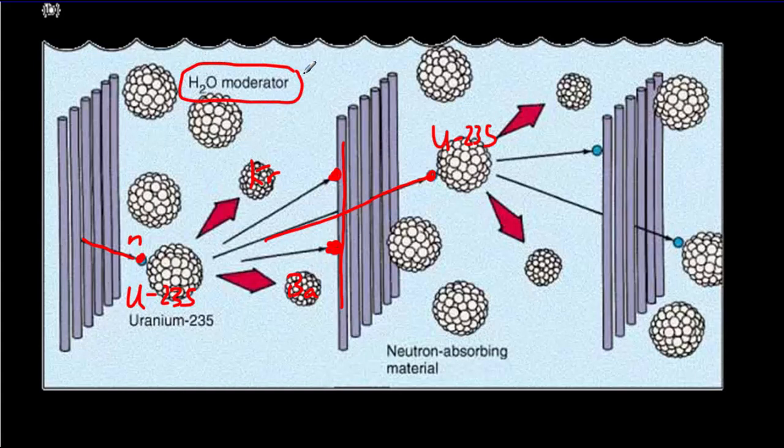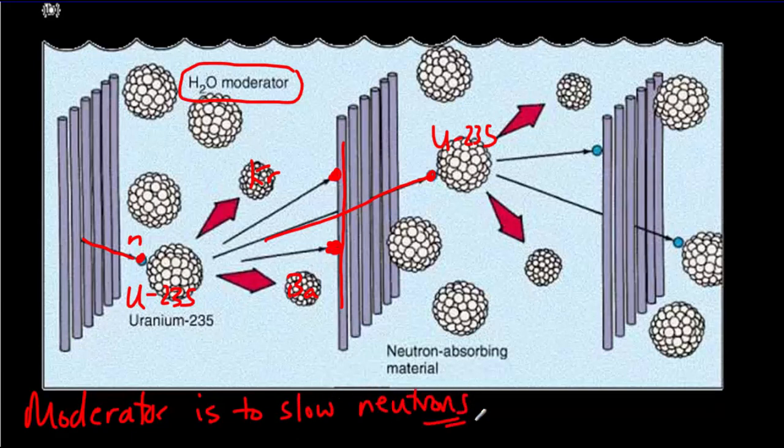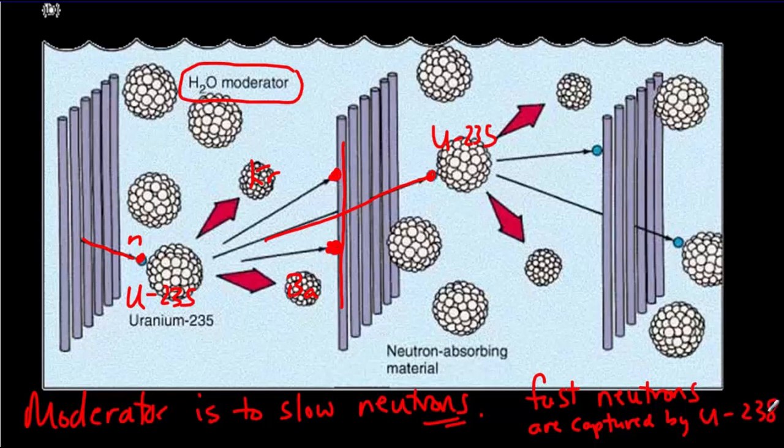But there's also something else in here and that's called the moderator. The moderator is generally just water. And the function of the moderator is to slow neutrons. Because, recall, it's only slow-moving neutrons that produce the fission of uranium-235. Fast-moving neutrons are captured or absorbed by uranium-238. And remember, there's a lot more uranium-238 than there is uranium-235. So if your neutrons are moving too fast, they're all going to be absorbed. And the only thing we really want to absorb those neutrons is the control rods. Because the control rods, we can put them in and take them out. We can control things with the control rods. So it's essential that you've got an effective moderator in there that's going to slow down the neutrons.